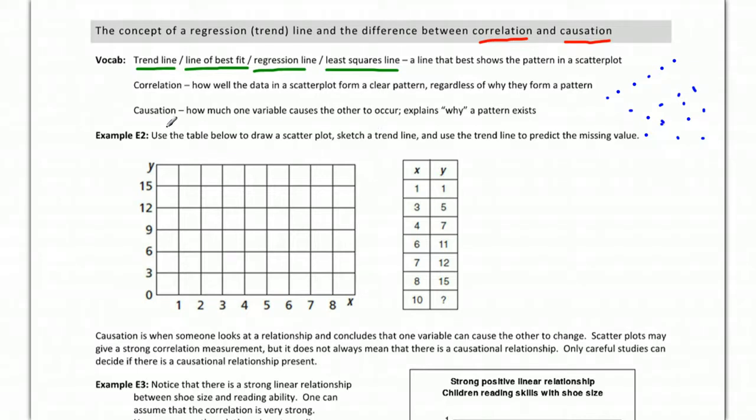And then causation. This gets to the question of why. Causation is how much one variable causes the other to happen. So it's not just that they're related, but it's the reason why. So when it's causation, there has to be a reason.